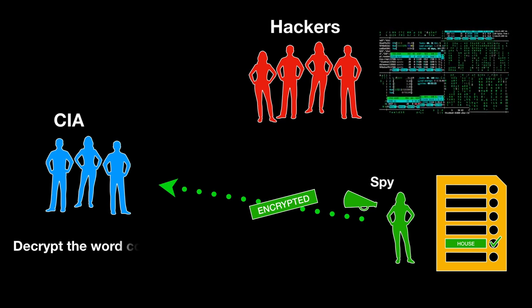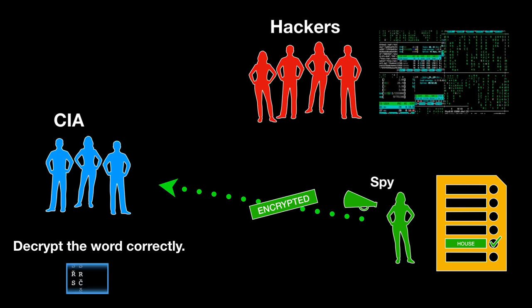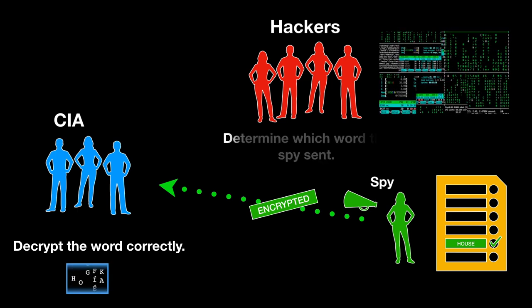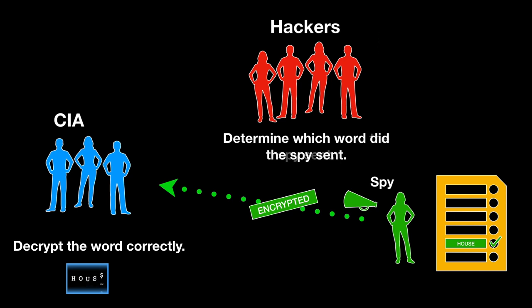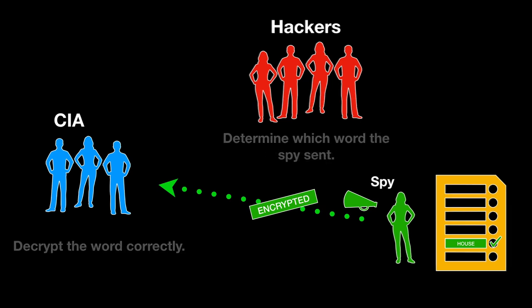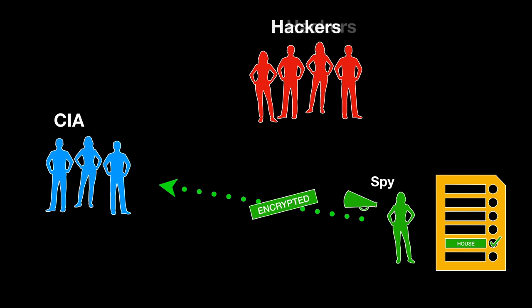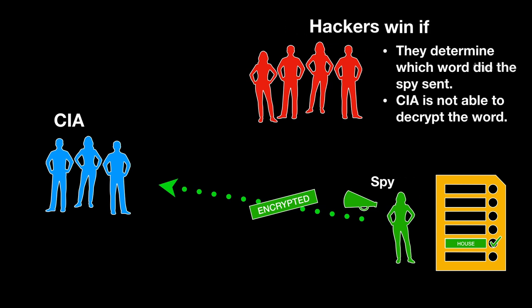CIA cannot give the spy any feedback. Once the spy is done, CIA starts decrypting the message and hackers need to determine which word the spy sent. Keep in mind that the CIA doesn't know the list, so the cipher really needs to be able to transfer any word. The hackers win if they determine which word was sent, or if the CIA fails to decrypt it correctly. CIA wins only if they decrypt the word and hackers don't know which word was sent.